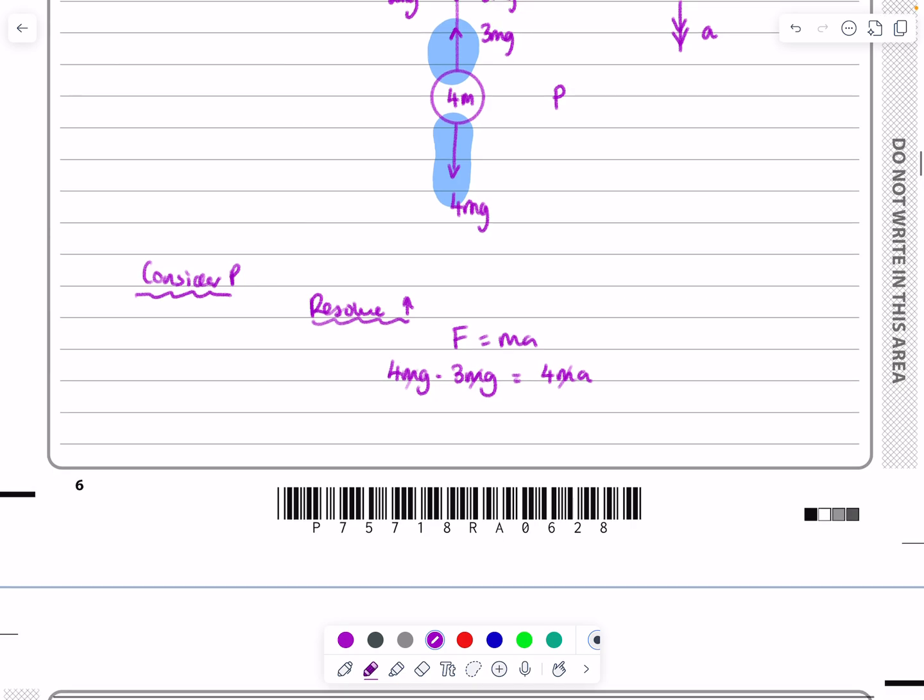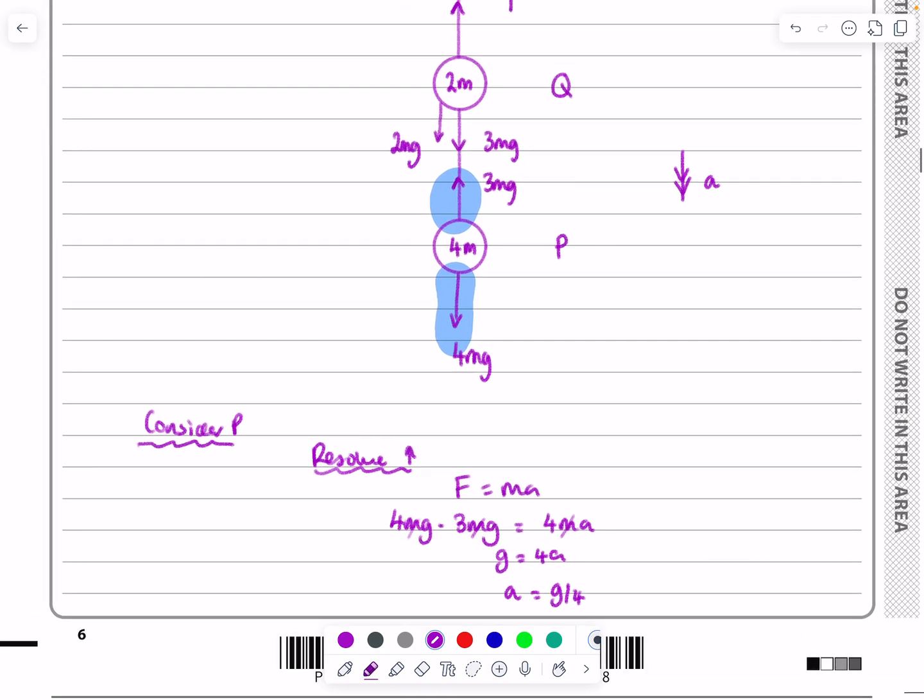Cancel out those M's and I can get that G equals 4A, or rather A equals G over 4. So by considering P first of all, I was able to find out what the acceleration was.